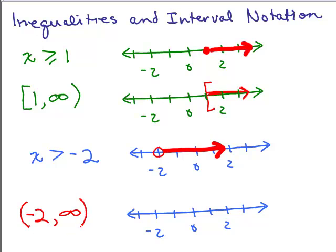Any time you're dealing with infinity all the way to the right or negative infinity all the way to the left, we're going to use a parenthesis next to infinity. In interval notation, you put the smaller number on the left and the larger number or infinity on the right.